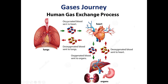The process starts at the lungs. Oxygen enters the lungs, then oxygenated blood is transferred through the heart and cardiovascular system to the rest of the organs. Then deoxygenated blood is also transferred through the cardiovascular system back to the lungs, where CO2 is removed.